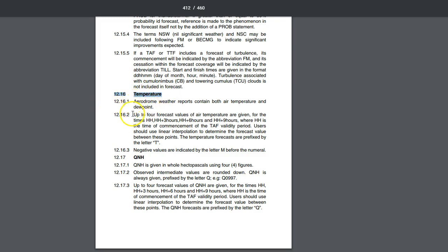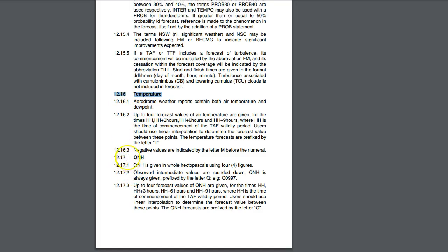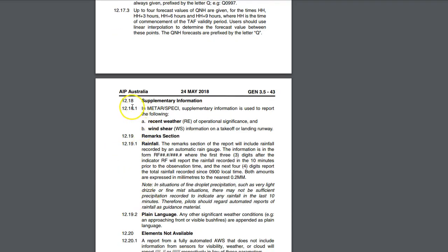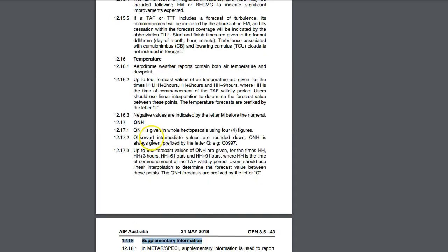And then each paragraph has paragraph 1, 2, 3. And then it goes to 12 17, which is QNH, which is a change of topic. So 1, 2, 3. And then if we go down, you'll notice 18 swaps topic. So every time you see that number change, it's going to swap topic.